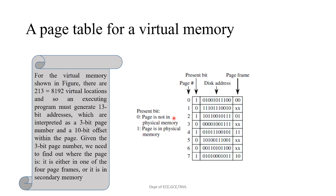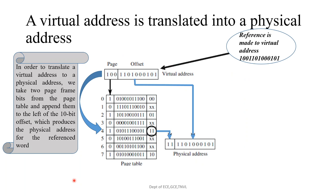For the virtual memory shown in this figure, there are 2^13 — that is 8192 — virtual locations. An executing program must generate 13-bit addresses, which are interpreted as a 3-bit page number and a 10-bit offset within the page. Given the 3-bit page number, we need to find out whether the page is in one of the four page frames or in secondary memory. This is how virtual addresses are translated into physical addresses to check whether the requested data is in a page frame. All virtual memory addresses must be changed into physical memory addresses. In order to translate a virtual address to a physical address, we take the two page frame bits from the page table and append them to the left of the 10-bit offset, which produces the physical address for the referenced word.